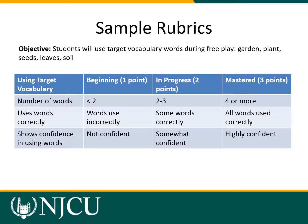Here's a rubric for using target vocabulary. The objective is: students will use target vocabulary words — garden, plant, seeds, leaves, and soil — during free play. The rubric again has three levels. The first row is the number of words used: fewer than two, two to three, or four or more. The second row is whether the words are used correctly. The third row is confidence: not confident, somewhat confident, or highly confident.